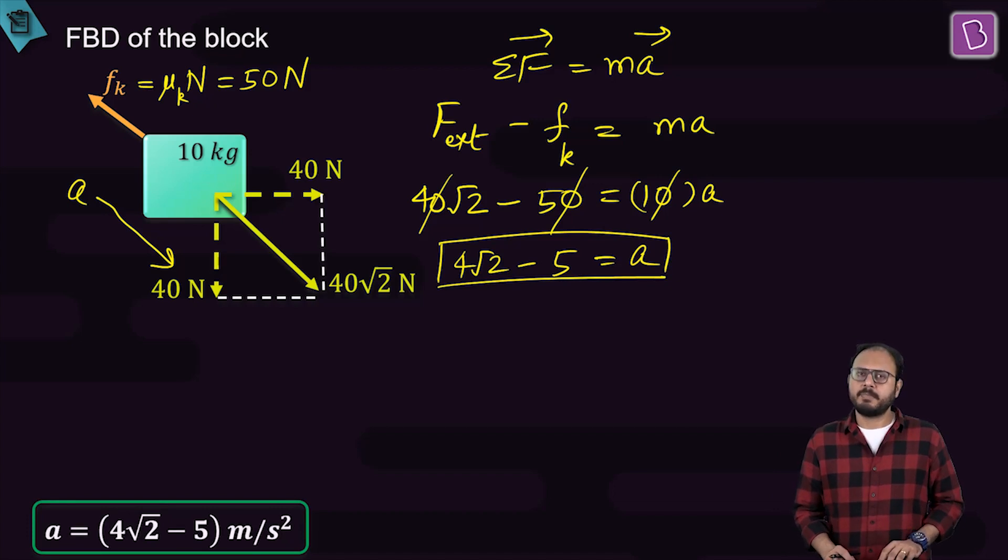And voila, 4 root 2 minus 5 meter per second squared is your acceleration. Why did I take this problem? It looks simple, I agree, but I wanted to show that the friction is responding to the net external force.